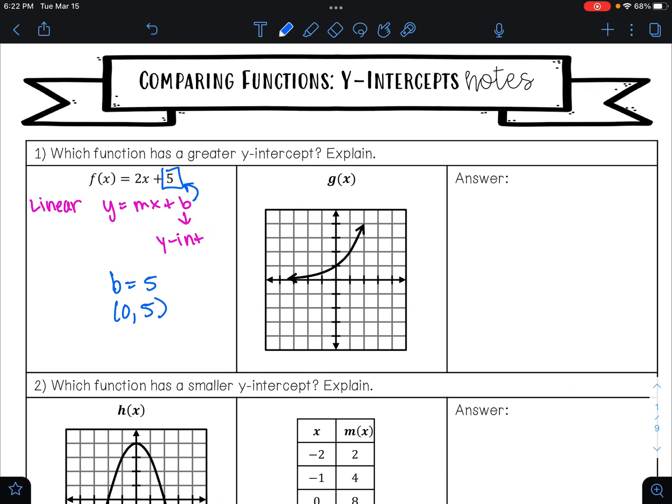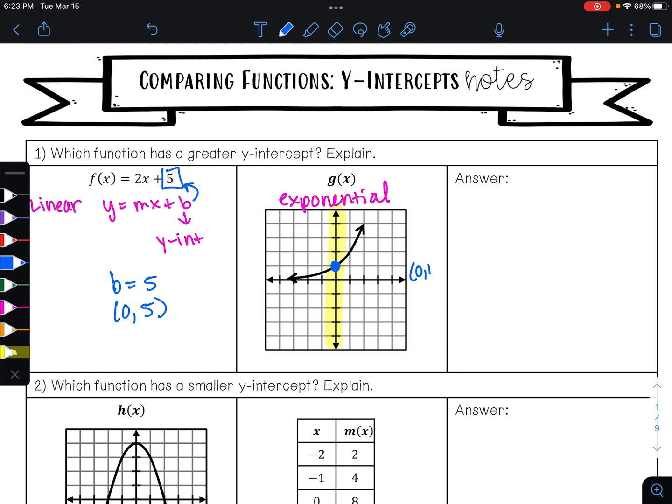For g(x), we are given a graph. And I can tell that this graph is exponential because I have an exponential growth curve. Our y-intercept is where our graph crosses our y-axis. And so that is happening at this point right here. This is the point (0, 1).